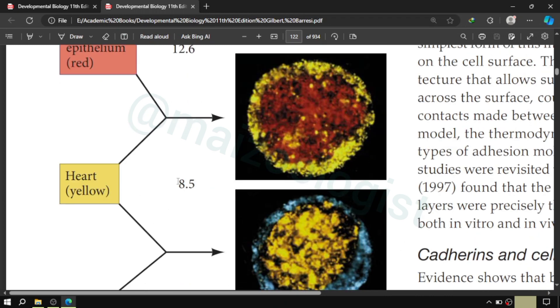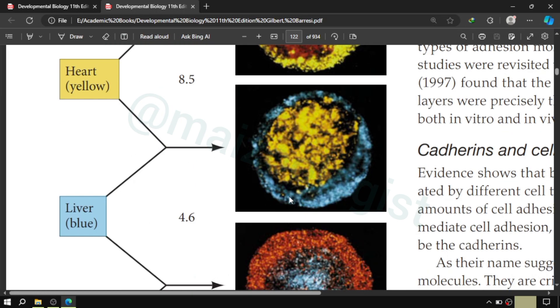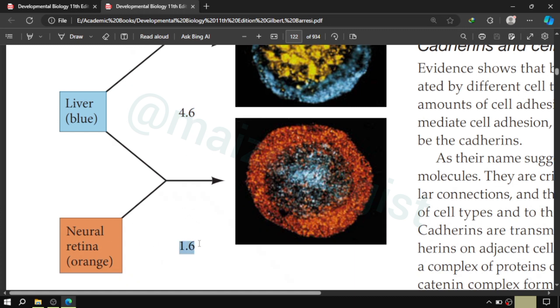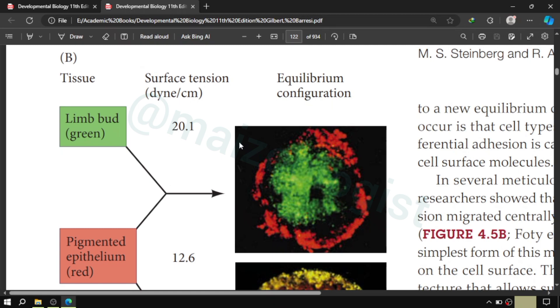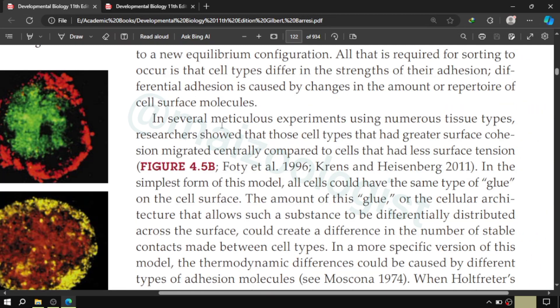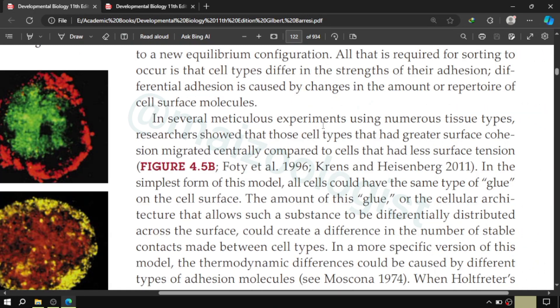And here the yellow one has lower surface tension. It is external and the red one is internal to yellow. And in similar fashion is blue one, which has further lower surface tension, is external to yellow one. And then in a similar way this orange one is neural retina with the least surface tension among these, is external to the liver cells which have slightly higher surface tension. So the more the surface tension, the more internal the cells are present. The more internal movements the cells show. For when two cells are combined, then the cells that has greater surface tension, they move towards the center or they move internally.